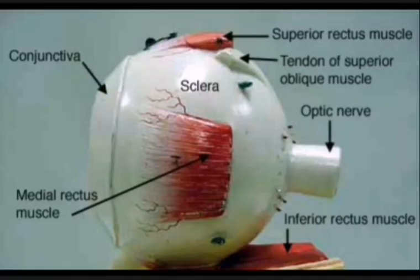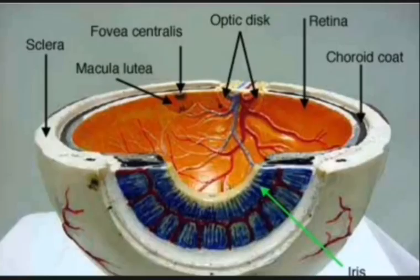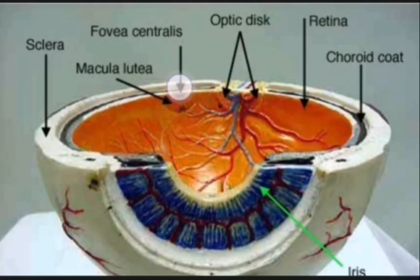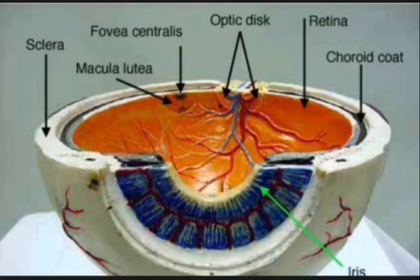So the inside view is just like this — this is the optic disc, and this is some retinal vasculature. Lateral to it is the fovea centralis, the central point where visual acuity is 100% accurate. And then the surrounding area is called the macula lutea.